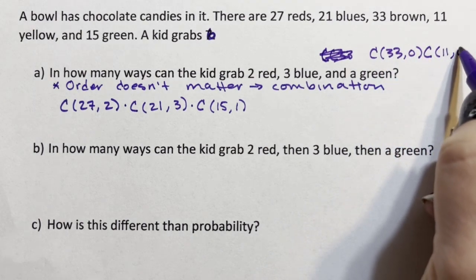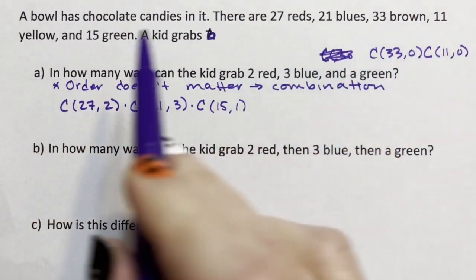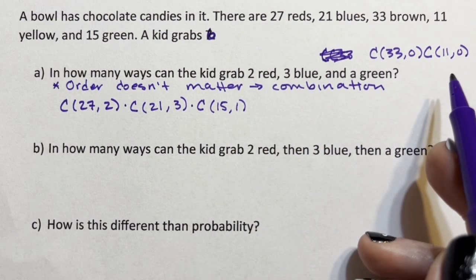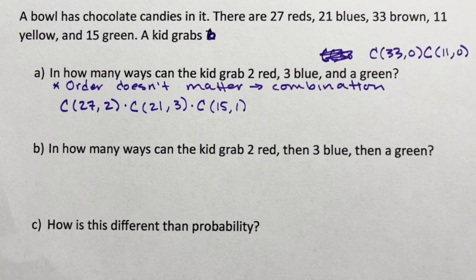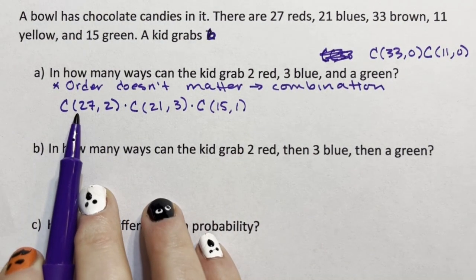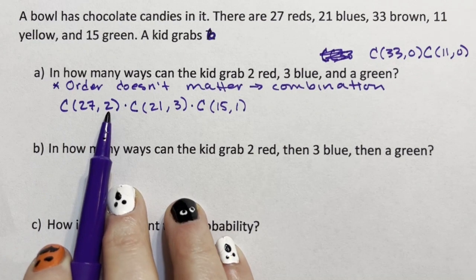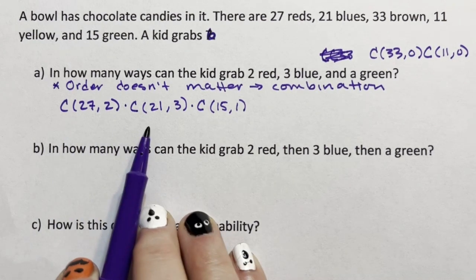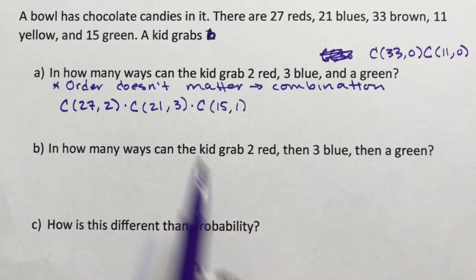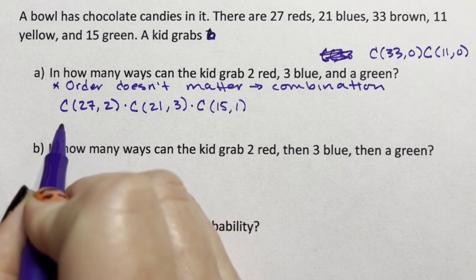Now I could continue with the combination of the 33 browns taken zero at a time, combination of the 11 yellows taken zero at a time. I could continue with that, but here's the trick: this is function notation. Most calculators use the function notation of ncr, so when you type this into a calculator you will type 27 ncr 2 times 21 ncr 3 times 15 ncr 1 equals.